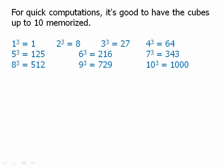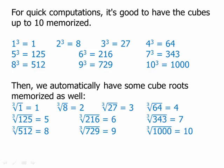For quick computations, it's good to have the cubes up to 10 memorized. Certainly the first 6 are very important, and if you know all 10, it's a time saver. Notice that 8 cubed is 2 to the 9th, and 4 cubed — that's 2 squared cubed — is 2 to the 6th, which would also be 2 to the 3rd squared, or 8 squared, which is 64. There are patterns here from our laws of exponents, so having these cubes memorized automatically gives us cube roots memorized.